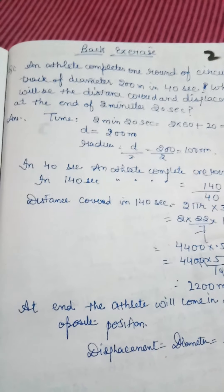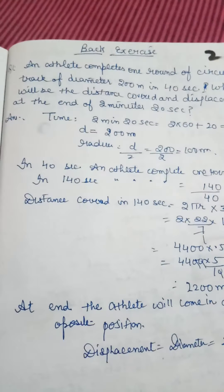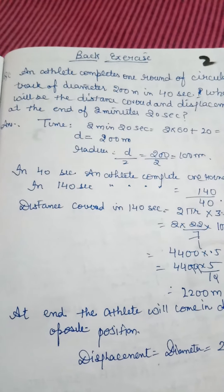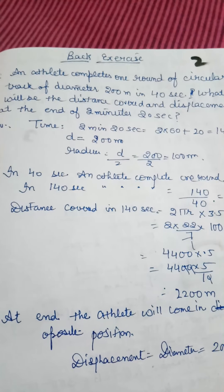Next question, back exercise NCERT book question number 1: An athlete completes one round of a circular track of diameter 200 meters in 40 seconds. What will be the distance covered and displacement at the end of 2 minutes and 20 seconds?